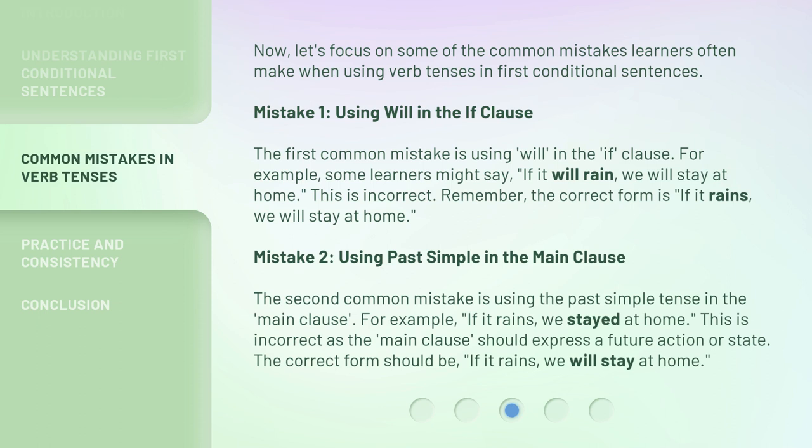Mistake 2: using past simple in the main clause. The second common mistake is using the past simple tense in the main clause. For example, 'if it rains, we stayed at home.' This is incorrect, as the main clause should express a future action or state. The correct form should be: 'if it rains, we will stay at home.'